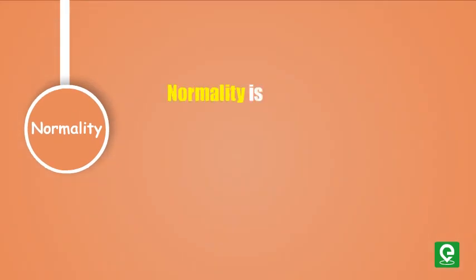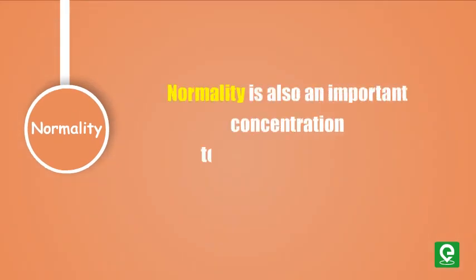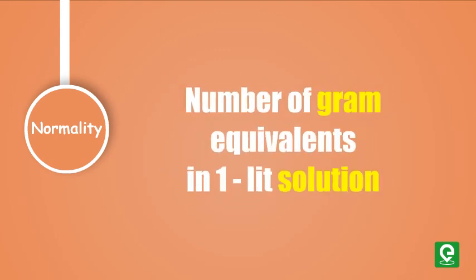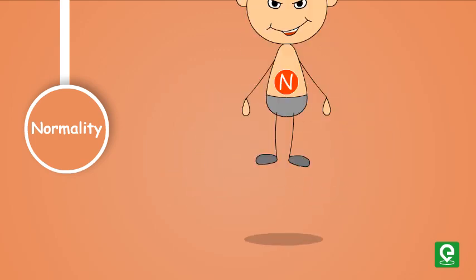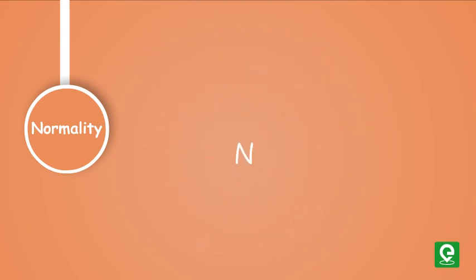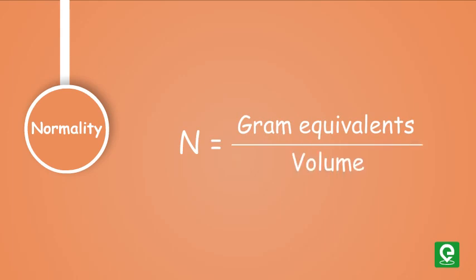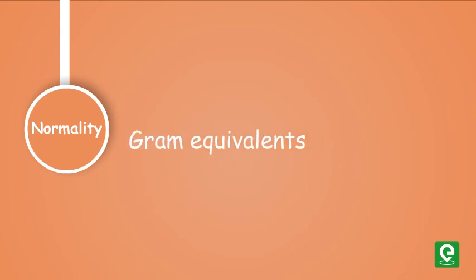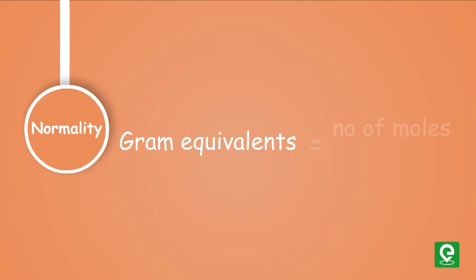Normality: normality is also an important concentration term which is defined as number of gram equivalents present in 1000 milliliter of solution. It is represented by the symbol capital N. Number of gram equivalents can be found by dividing the number of moles by n-factor, which is total amount of positive or negative charge in a compound.